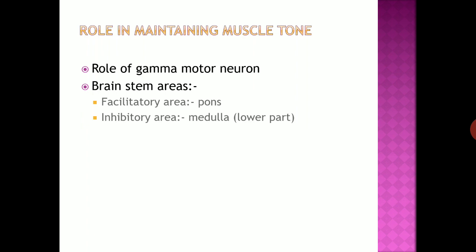The first function is the role in maintaining muscle tone — how the tone of a muscle is controlled by stretch reflex. There is a role of gamma motor neurons. As we know, there are two motor neurons present in the spinal cord in the ventral grey horn: alpha motor neuron and gamma motor neuron. For the purpose of maintaining muscle tone, we require gamma motor neurons.